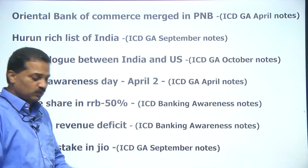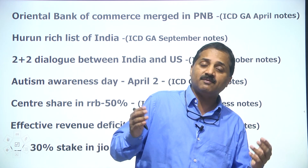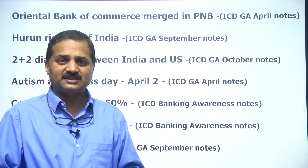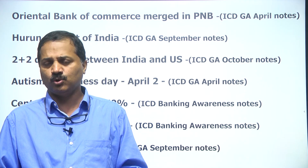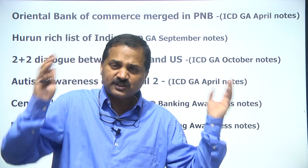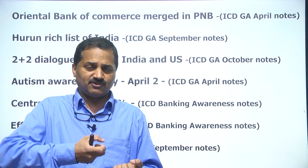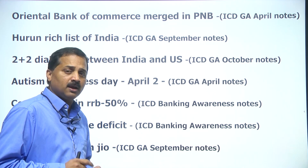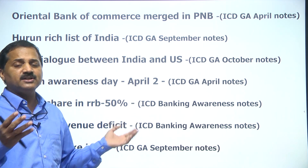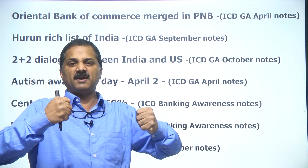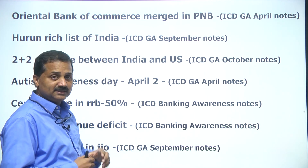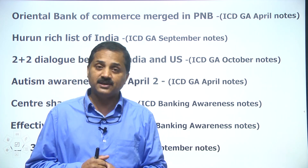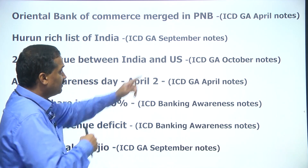Oriental Bank of Commerce — these were the seasons of bank merging. Originally there were 28 public sector banks in India — 20 nationalized and 8 public sector banks. Thanks to the government's decision to merge small banks to become bigger, Oriental Bank of Commerce, a Delhi-based bank, was merged with PNB, the second biggest bank in India, also a Delhi-based bank. That was in my April notes.